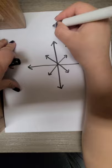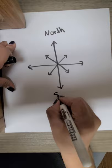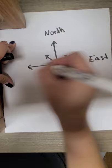At the top we are going to write north, the bottom we will write south, and to the right we will write east, and lastly west.